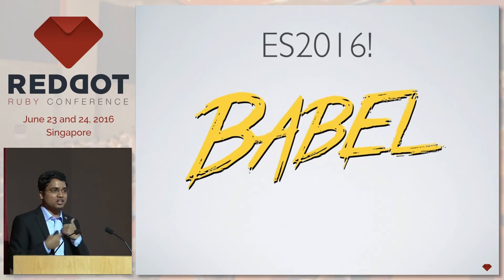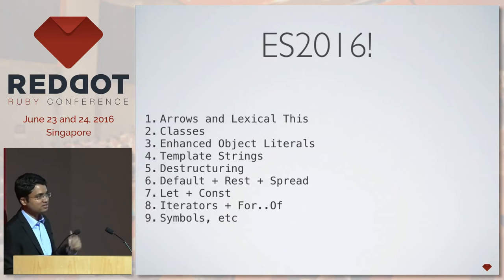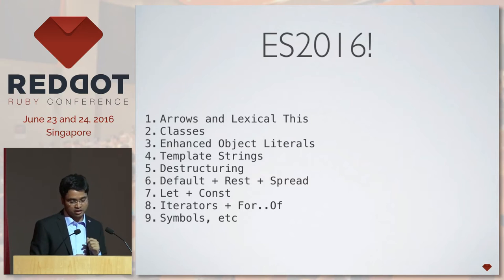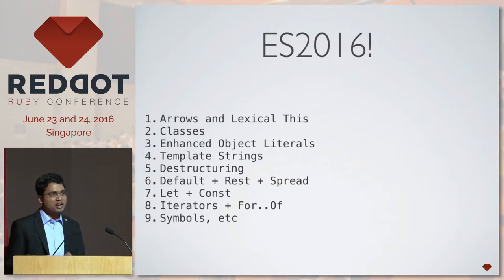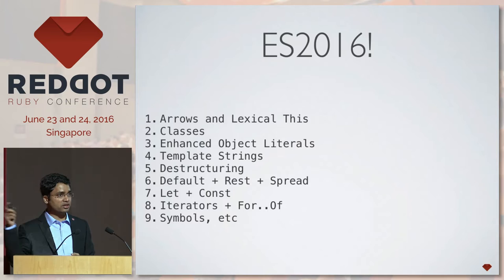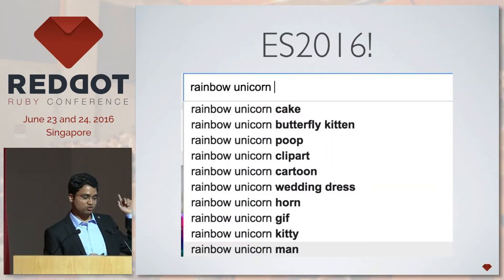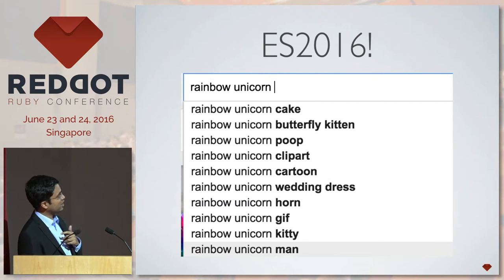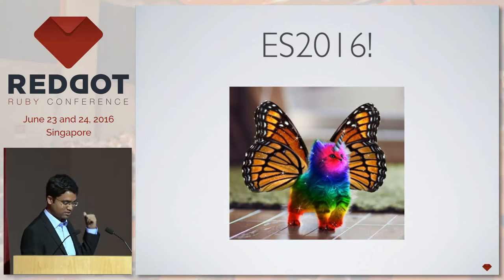The next exciting thing is Babel support for Sprockets. ES6 has amazing features — arrow functions, lexical binding, classes, enhanced object literals, and more. By default in the latest version, Sprockets ships with Babel support, so you can start using ES6 by giving files the .es6 extension. I tried to find a good emoji to represent this excitement but internet search results get pretty wild — rainbow unicorn poop and all kinds of things.